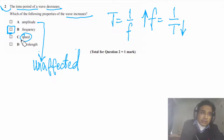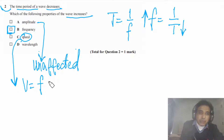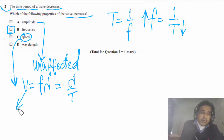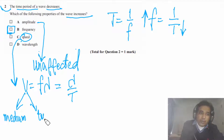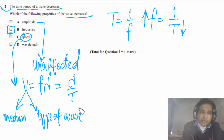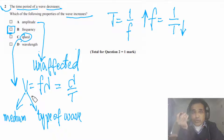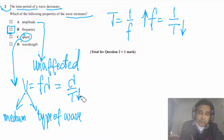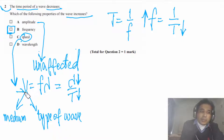For option C, speed: speed is equal to f times λ, or equivalently λ over T. The speed of a wave depends on the medium and also on the type of wave — different waves have different speeds in the same medium, and the same wave has different speeds in different media. In this case, if time period decreases, λ will also decrease, so speed stays constant.